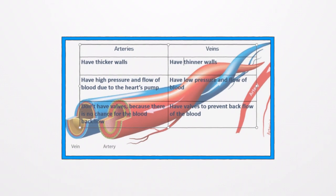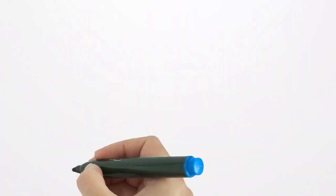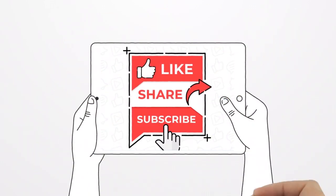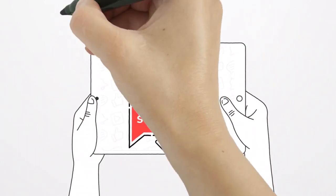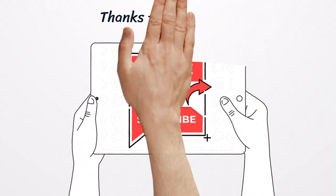The opposite happens in the vein, in which the blood moves slower from the body parts to the heart and thus gives a chance for some blood to backflow. That is why we have valves in our veins.